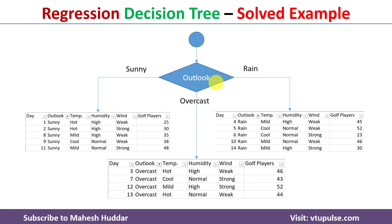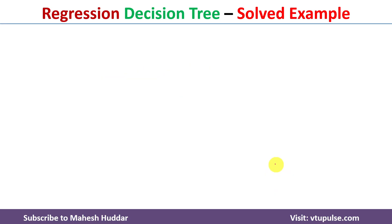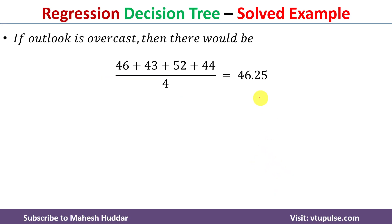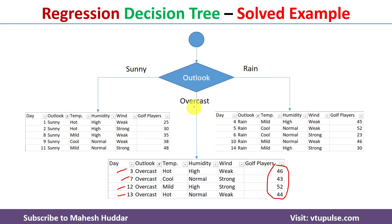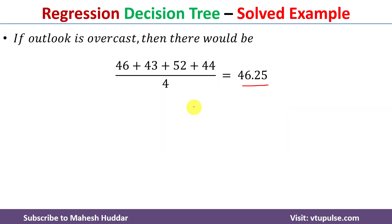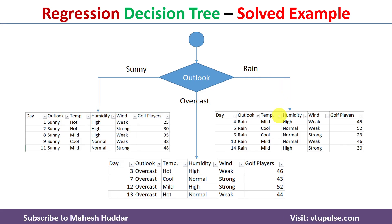Now consider the overcast branch, which has only four examples. Rather than building a decision tree further, we apply the pruning technique and take the average of these four examples, which equals 46.25. So whenever Outlook is overcast, the predicted value is 46.25.